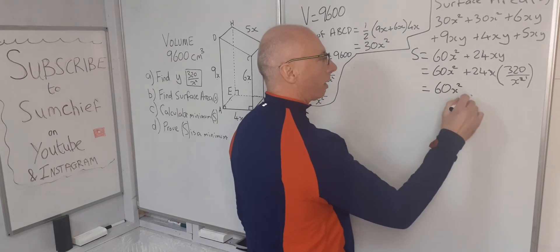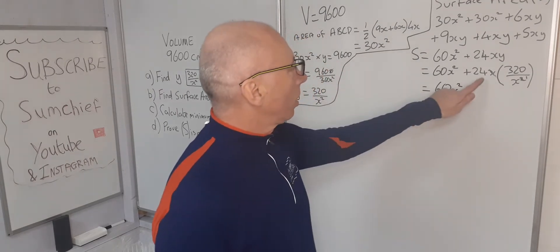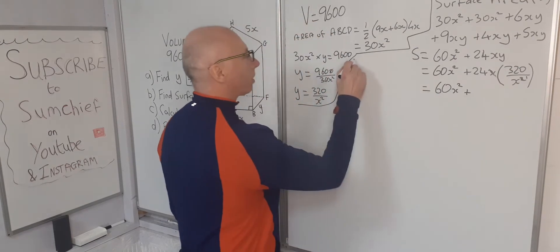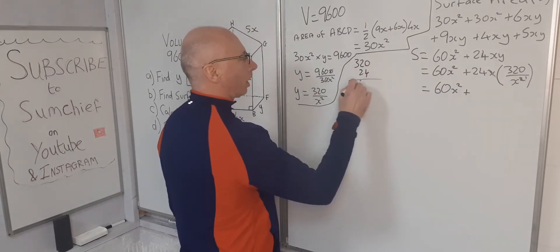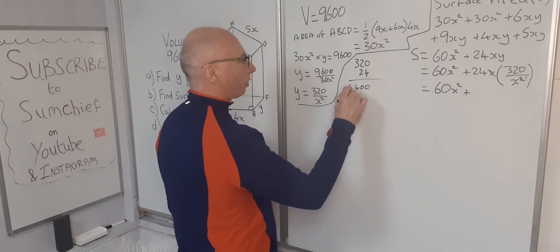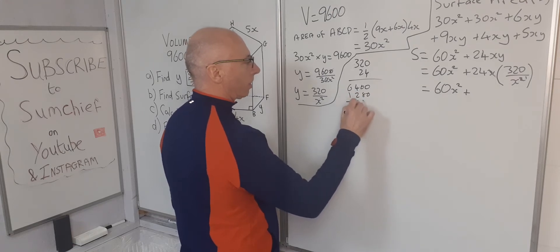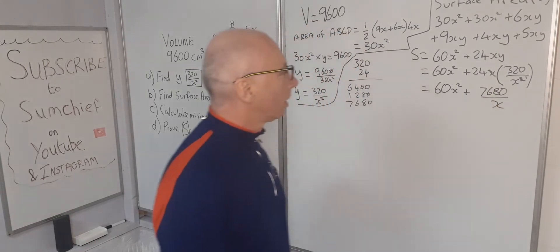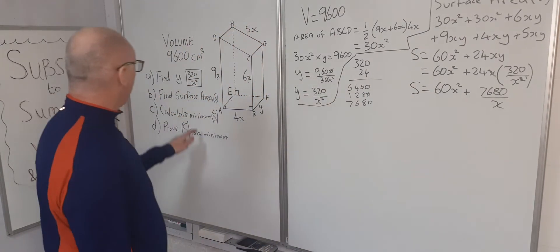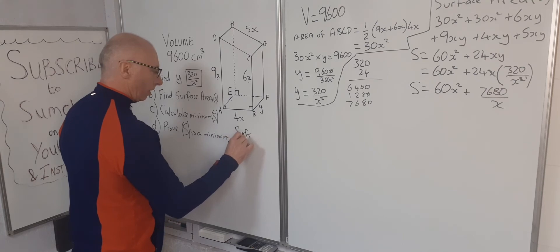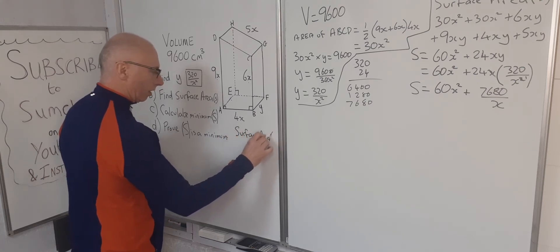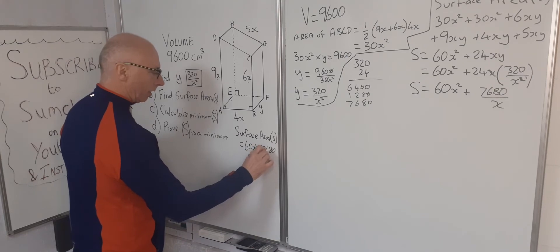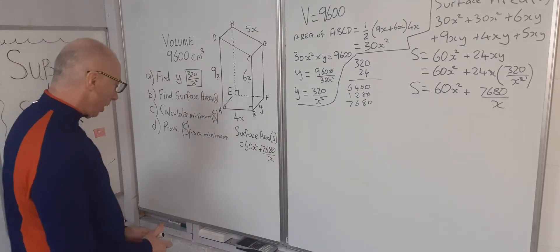Calculating 24 times 320: 6400 plus 4 times 320 equals 1280, giving 7680. So S equals 60x squared plus 7680 over x. That's our surface area expressed in terms of x.